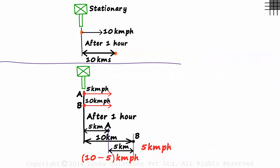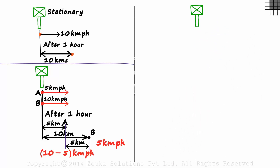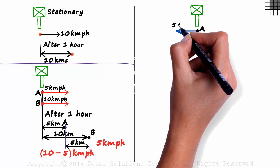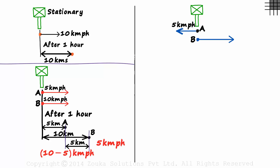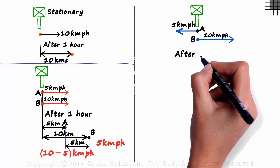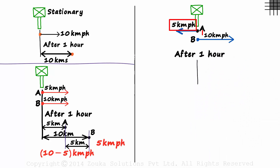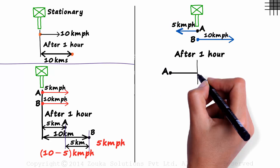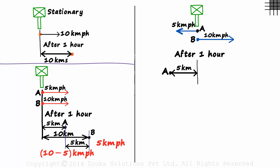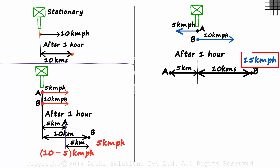But what if the two cars are moving in opposite directions? This is the green stationary point. Car A moves towards the left at the speed of 5 km per hour, and car B moves towards the right at the speed of 10 km per hour. Both cars leave at the same time. After one hour, car A will be 5 km away from the starting point and B will be 10 km away. The distance between them is 15 km. The distance increases at the rate of 15 km per hour — that's the relative speed. Every hour the distance between them will increase by 15 km.